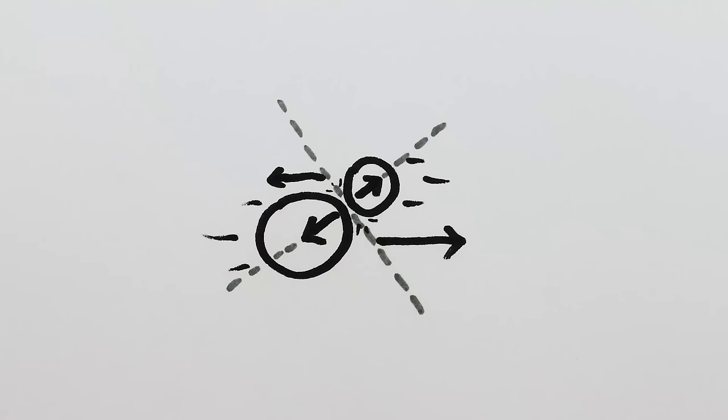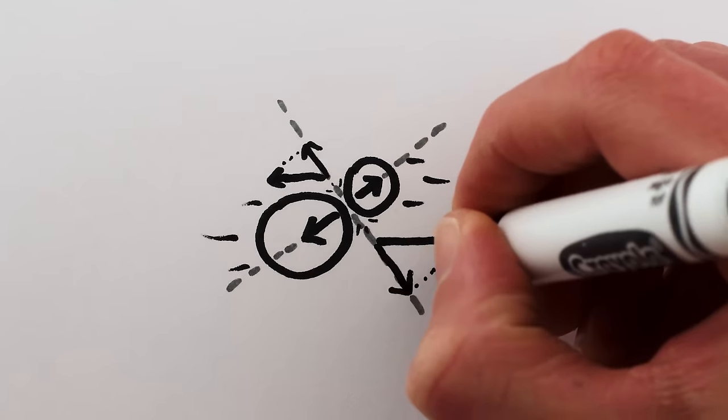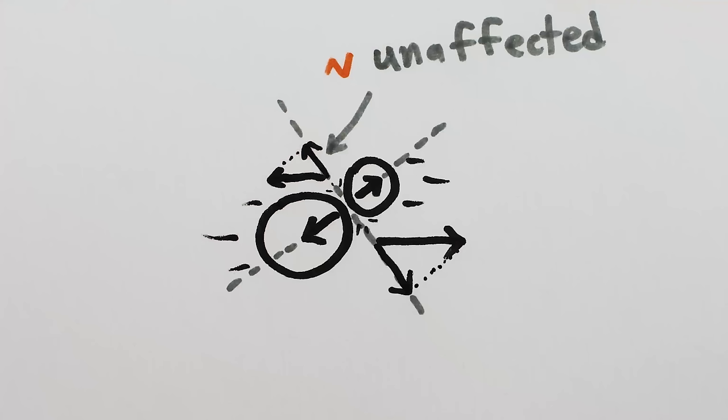typically perpendicular to the surface where the objects collide, though if the surface is complicated or there's friction, it might be a different direction. Since, by definition, there are no net forces in directions perpendicular to the net force, the motion of the objects in those perpendicular directions is unaffected by the collision.